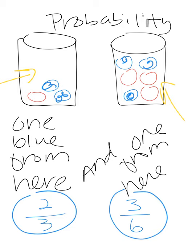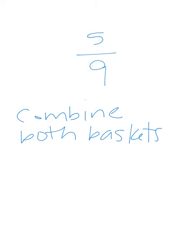And if you think about the probability of getting one from one and one from the other, add them up, five out of nine. You're going to combine both baskets.